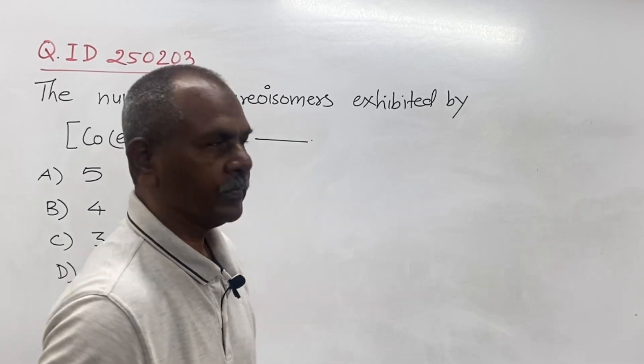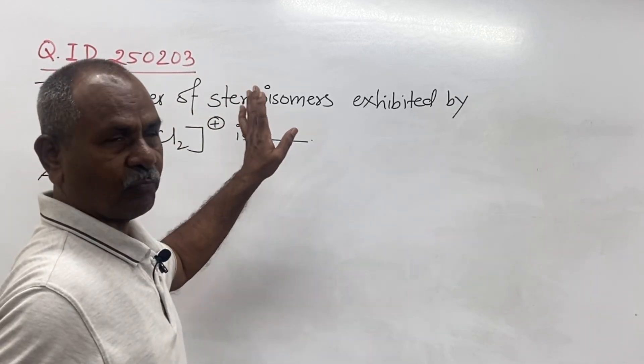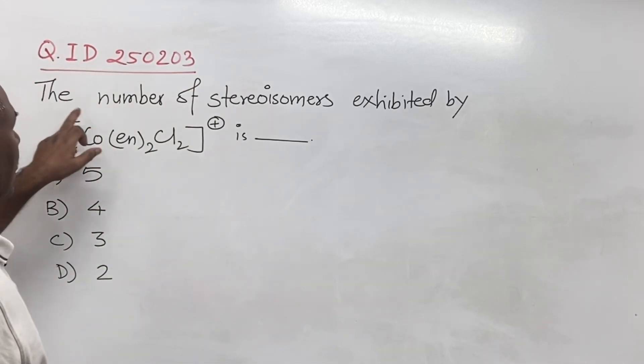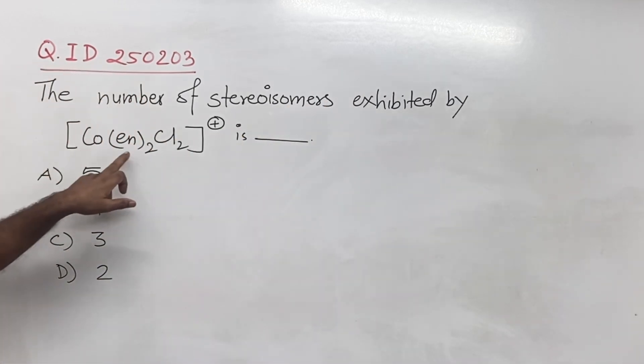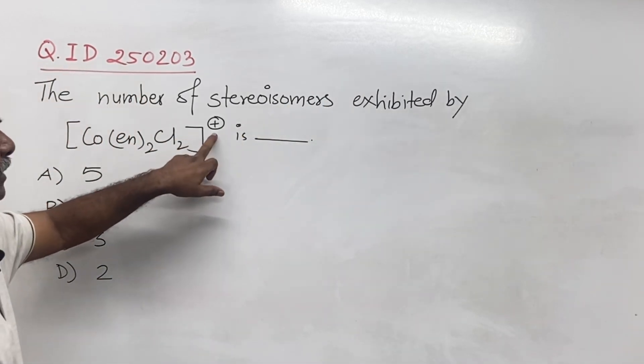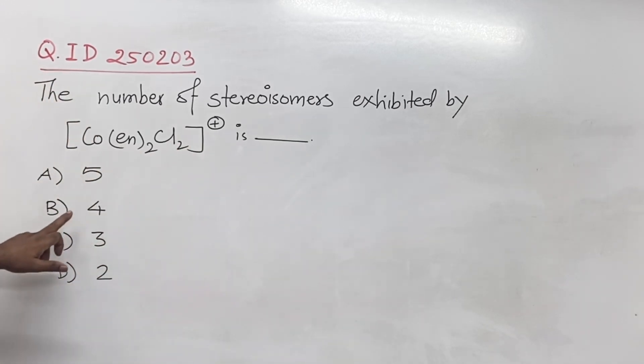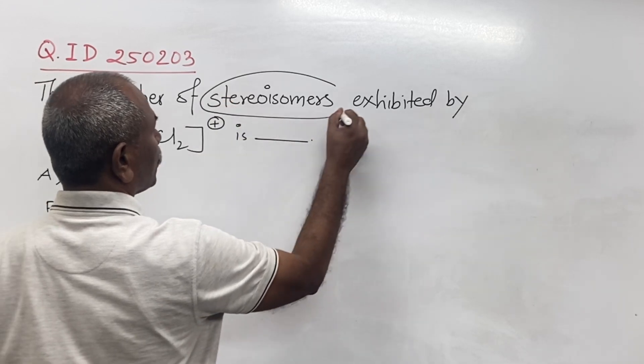Hi friends, this multiple choice question is from coordination compounds. The question is: the number of stereoisomers exhibited by [Co(en)₂Cl₂]⁺ complex ion is: A) 5, B) 4, C) 3, D) 2. First of all, you should know the meaning of stereoisomerism.